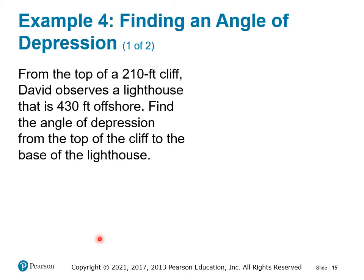Next problem: from the top of a 210-foot cliff, David observes a lighthouse that is 430 feet offshore. Draw a vertical line for the cliff labeled 210, assuming the cliff is at the shoreline. From the base, draw a horizontal line out 430 feet to the lighthouse. We now have an L-shaped figure. Find the angle of depression from the top of the cliff to the base of the lighthouse.